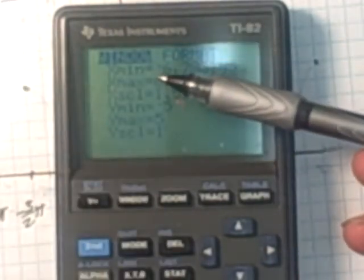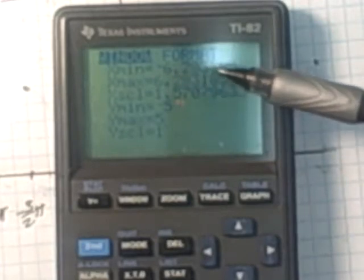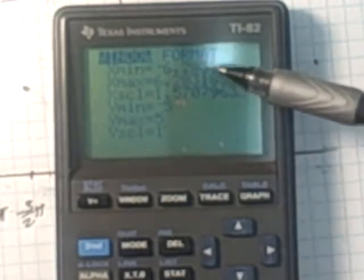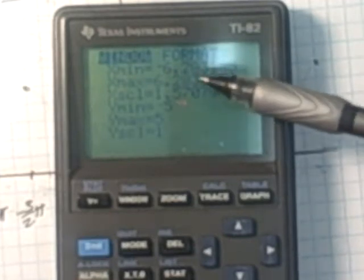The x maximum and minimum are negative 2π and positive 2π. I didn't type in the decimal numbers, I typed in 2π and negative 2π, the calculator converted them.